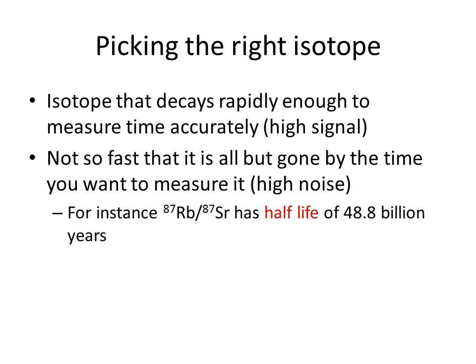We need an isotope that decays rapidly enough to measure time accurately — for our purposes, on the order of millions, probably hundreds of millions of years. We don't want anything that decays over a very long time period, like rubidium-strontium, which has a half-life of 48.8 billion years. To get half of all Rb-87 to decay to Sr-87, we would have to wait 48.8 billion years — that has not yet occurred because the universe hasn't been around that long. So rubidium-strontium would be useless, very similar to trying to measure a 50-meter dash with a sundial.